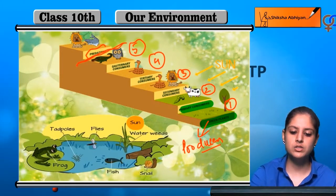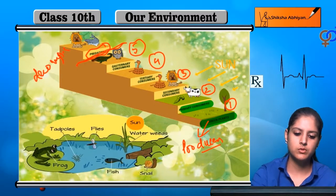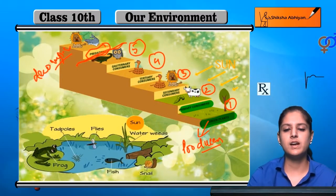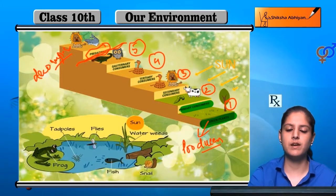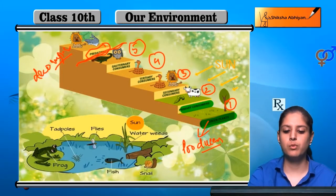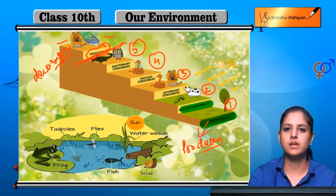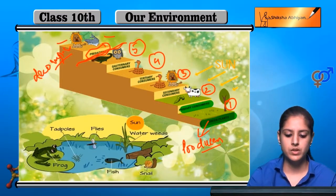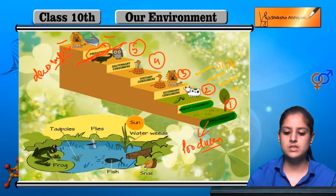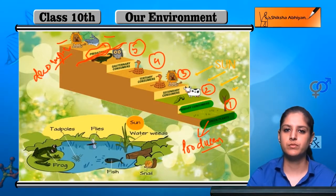After that, predators or decomposers feed on dead and decaying matter, or they feed on more carnivores. Animals like lions and whales are extremely carnivorous. This is the chain — these are the levels of the food chain.